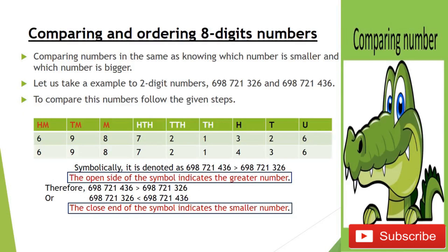Now we are going to slide three. You can see comparing and ordering eight-digit numbers. What's the meaning of comparing? Comparing means differentiate between two digits, and ordering means something arranged in order form or sequence. Comparing numbers is the same as knowing which number is smaller and which number is bigger. Take an example: two-digit numbers, 698 million 721 thousand 326 and 698 million 721 thousand 436. To compare these numbers, follow the given steps.